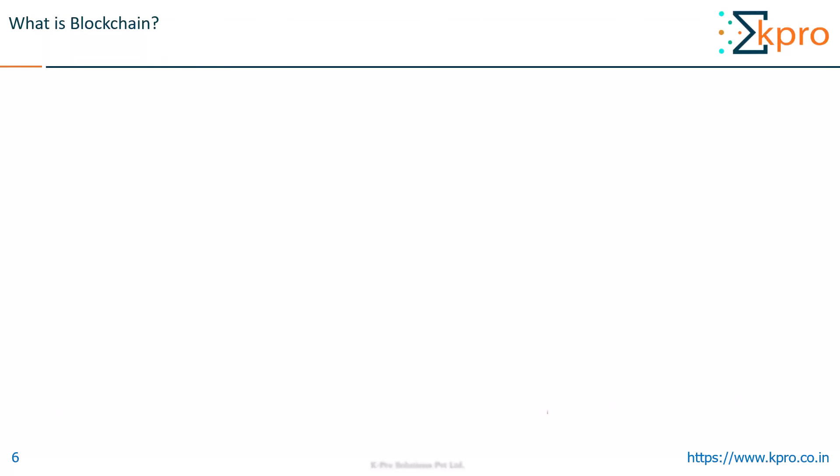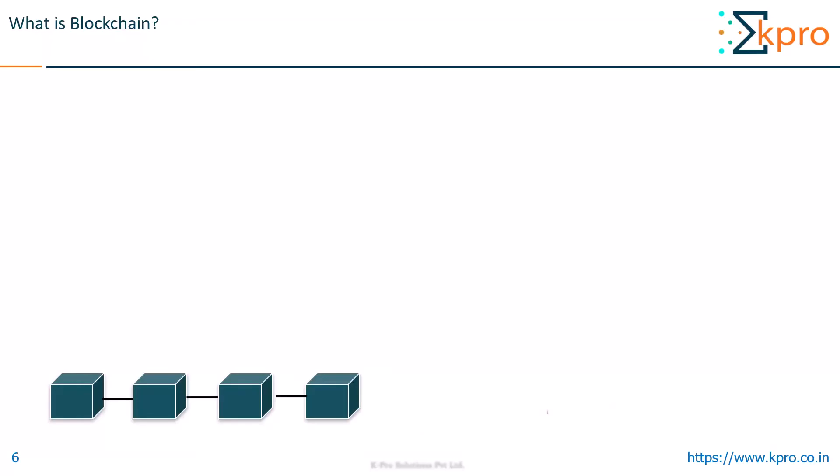So what is the first thing that comes to your mind when you hear the word blockchain? Is it chain of blocks? Yes, makes sense. So blockchain is nothing but a chain of blocks. But what do we exactly mean by chain of blocks? So to understand that, let us dig up a bit. If I have to define blockchain, I'll say that it is a distributed ledger of immutable records distributed over a peer-to-peer network.